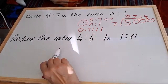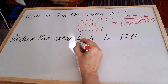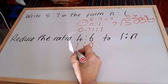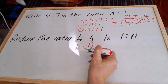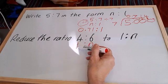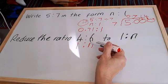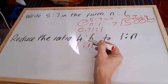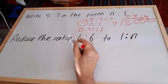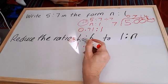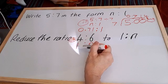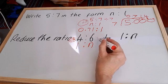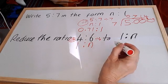Reduce the ratio 4 to 6 to 1 to n. So 4 to 6, we want 1 to n. The 1 is now on the left hand side. That means we know the answer is going to be 1 on the left. But we don't know this, the n standing for any number, which we've got to find out. So we will divide our 4 by 4 because we know that a number divided by itself gives us 1. And then we will use the same division on the opposite side. 6 divided by 4.